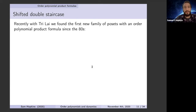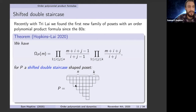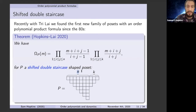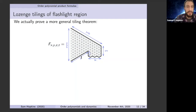Recently, with Tri Lai, we found the first new family of posets with order polynomial product formulas since Proctor's work. These are what we call the shifted double staircase shape — you take a shifted staircase shape and paste another staircase on its side. It's a two-parameter family in terms of n and k, and we have a product formula for the order polynomial of the shape.